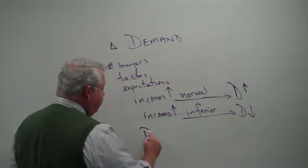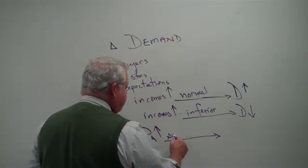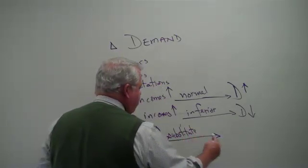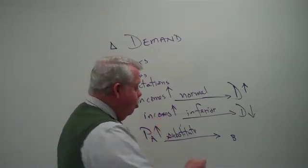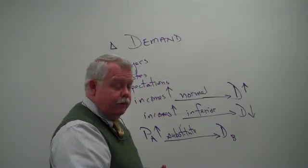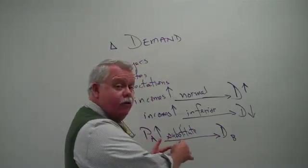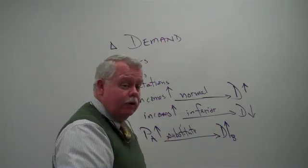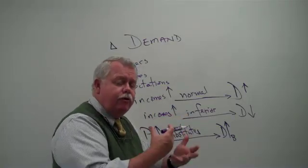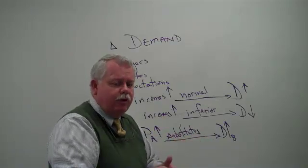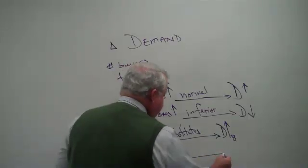And now the fifth factor that shifts the demand curve is the price of related goods. Again, two varieties there. If the price of good A increases and it is a substitute for good B, like Pepsi and Coca-Cola, Chevys and Fords. If the price of Coca-Cola goes up, what will happen to the demand for Pepsi? Well, if the price of Coke goes up, people don't buy it as much. And they move over and they start buying more of the other good, Pepsi. So an increase in the price of one leading to an increase in the demand for the other. Those goods are substitutes by definition.